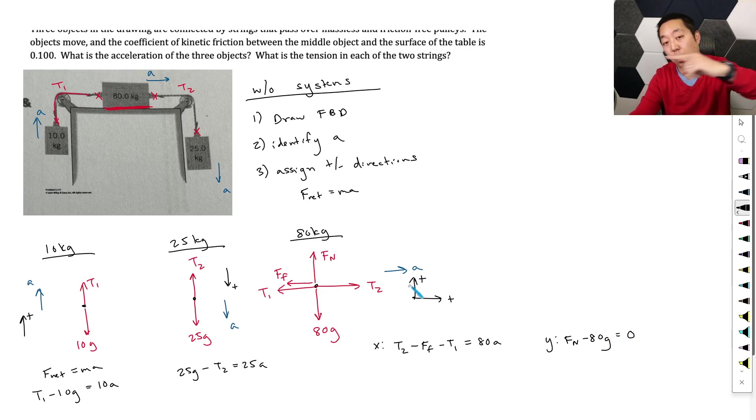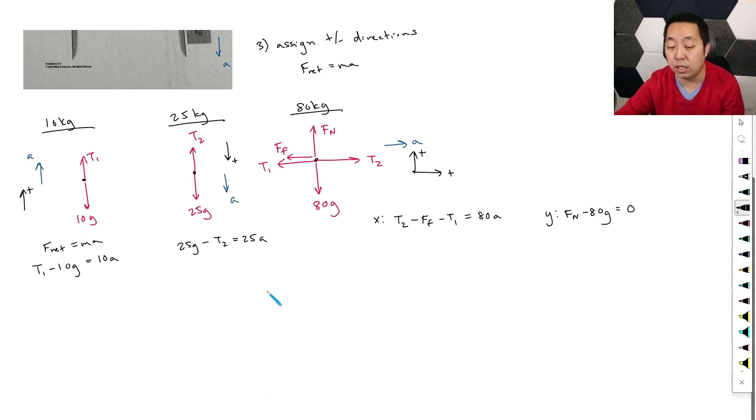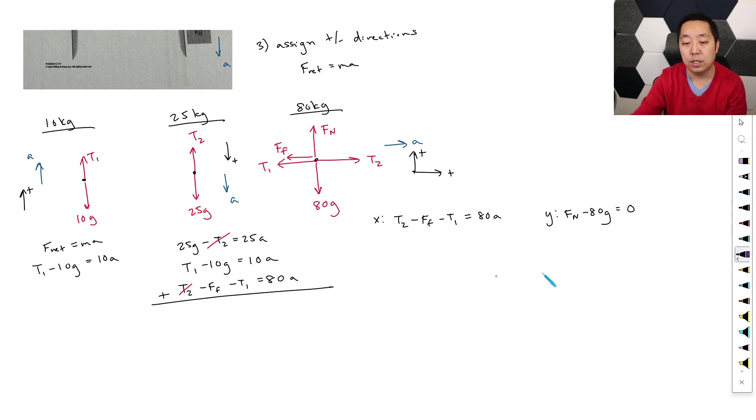So really understand why that's zero. It's because the acceleration vector is only to the right, there's no upward or downward component there. Okay, now if you do this all correctly and follow this, one of the things that I like to do is I like to add all the equations together with the acceleration here, and that will eliminate. So I'm just going to copy this one over here, and copy this one over here. And the reason we do that is that will eliminate the tensions. I don't need to know the tensions yet, or I'm looking for the acceleration first. And if I add these, you'll notice that minus T2 and plus T2 will cancel, and then T1 and minus T1 will cancel. And so this is 25g minus 10g minus force of friction is equal to add these up 115a, 25a plus 10a plus 80a.